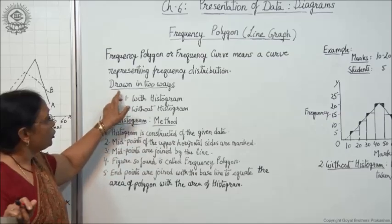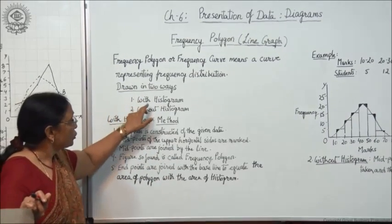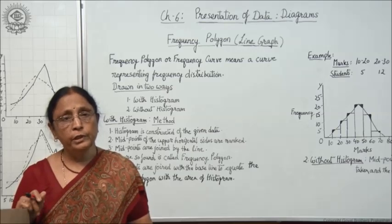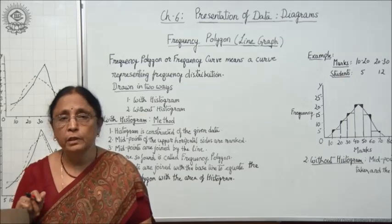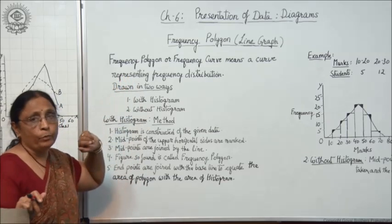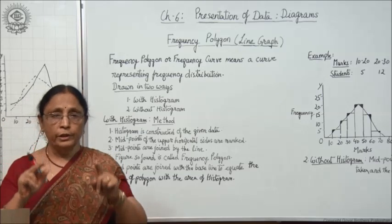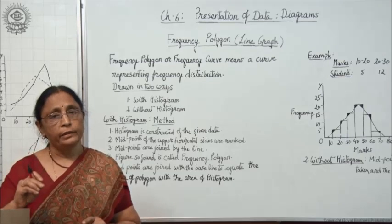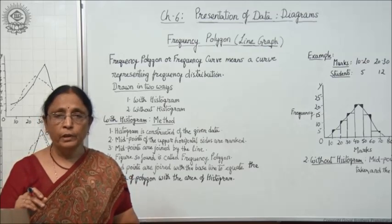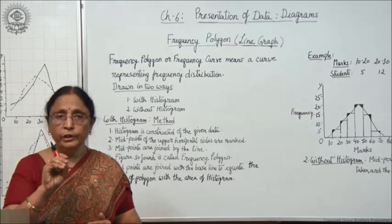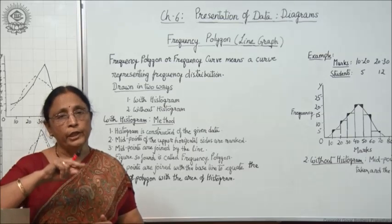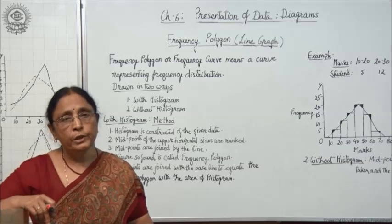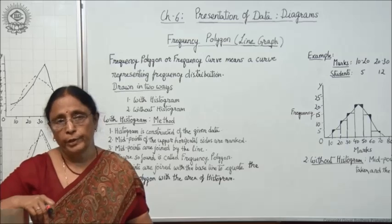These frequency polygons are drawn in two ways: first is with histogram, and second is without histogram. In the previous lecture, I told you what histograms are — these are joined rectangles representing the frequency distribution. Now, when drawing the frequency polygon with histogram, we draw the histogram first, then take the midpoints of each rectangle and join them by a line to get the frequency polygon.